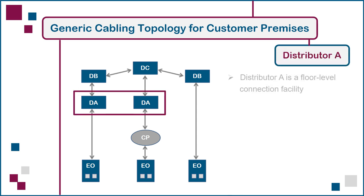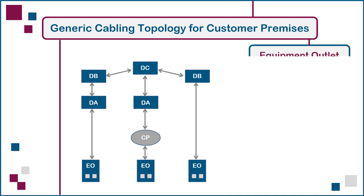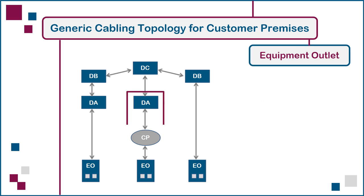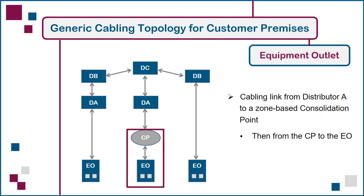Distributor A's are the floor-level connection facilities, located in one or more distributor rooms on each floor of a building. A cabling link from Distributor A can go directly to an equipment outlet or EO, such as a wall-mounted faceplate in an office. Optionally, it can go to a zone-based consolidation point, or CP, along with multiple other cables, and from there to an EO. The consolidation point serves as an additional connector between Distributor A and, for example, equipment outlets within open office modular furniture. Whenever the open office furniture needs to be moved or reconfigured, only the cables from the affected EOs to the nearby CP need to be replaced. The longer cable runs from the CP to Distributor A can remain undisturbed.